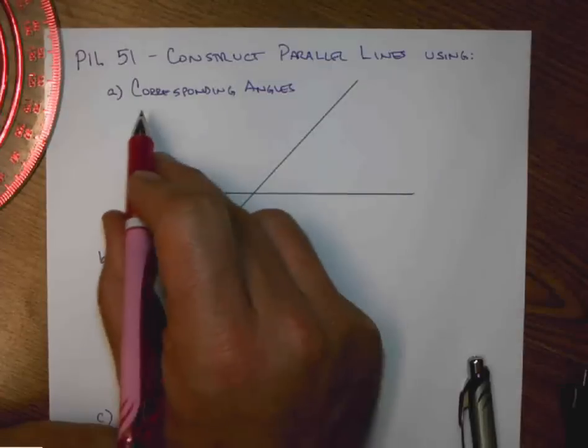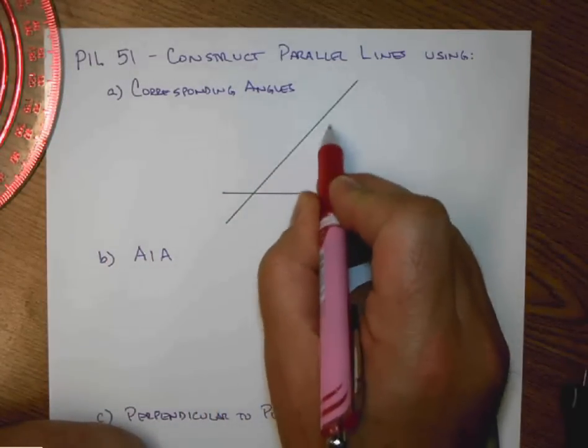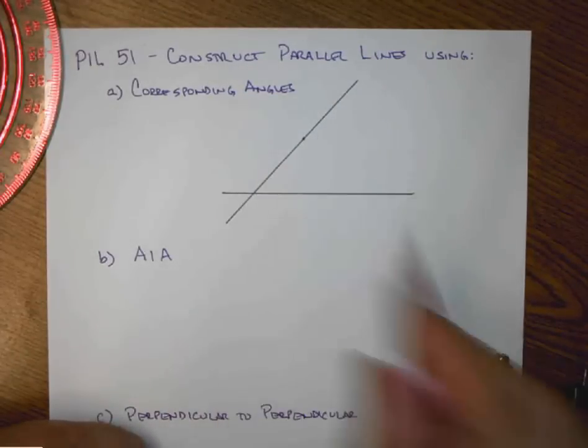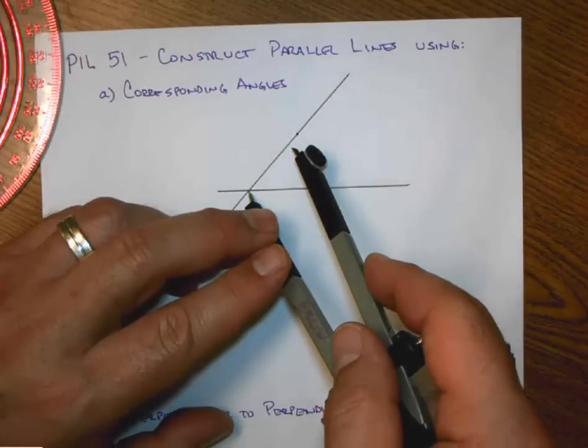My point is, because I'm going for corresponding angles, I'm going to copy this angle up to here. So I'll establish some point through which my parallel line will go, and now I'm going to build a congruent angle. It's like a copying of an angle.